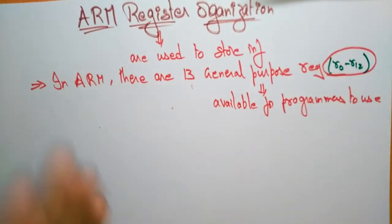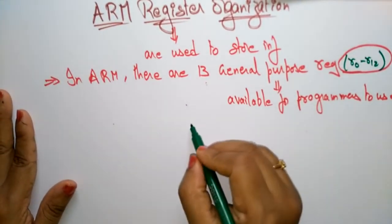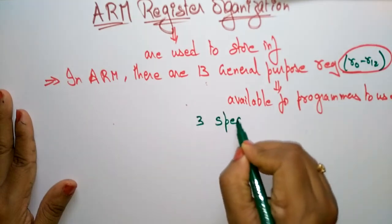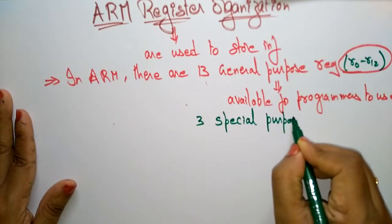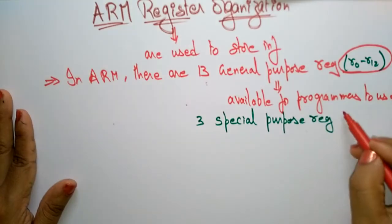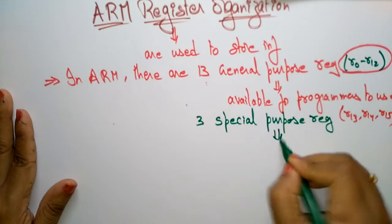And some special purpose registers are also there. In total there are three special purpose registers: R13, R14, and R15 — which are used to perform some specific tasks.